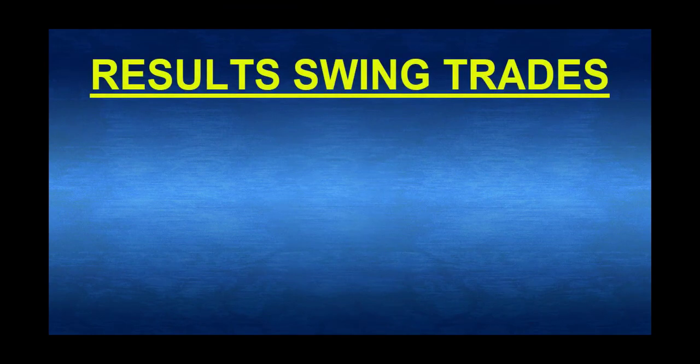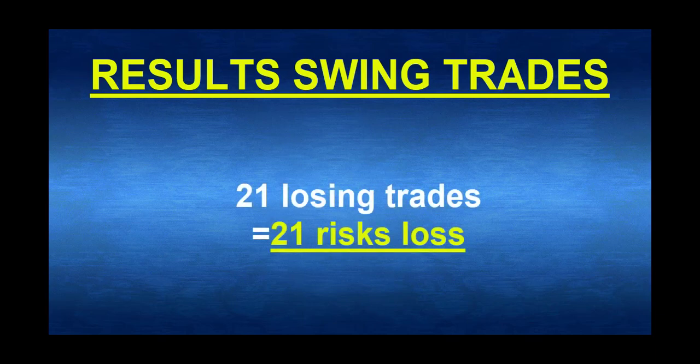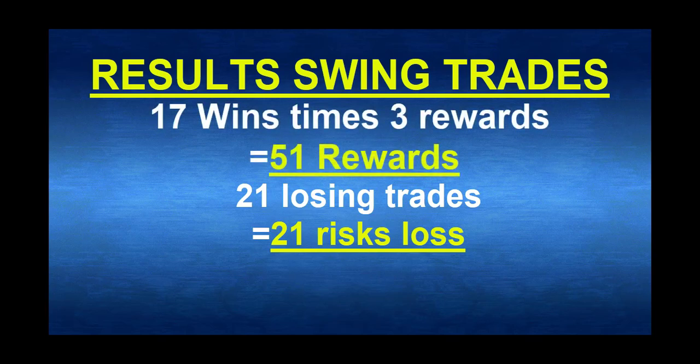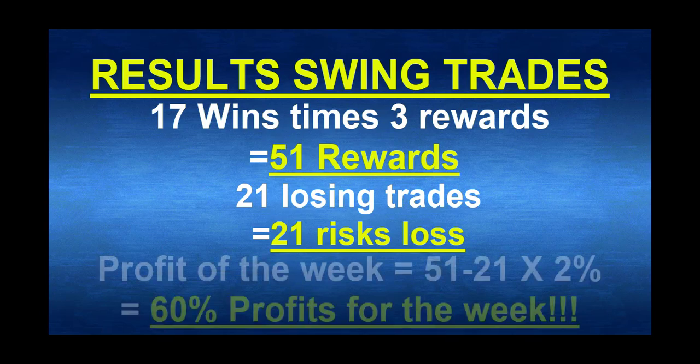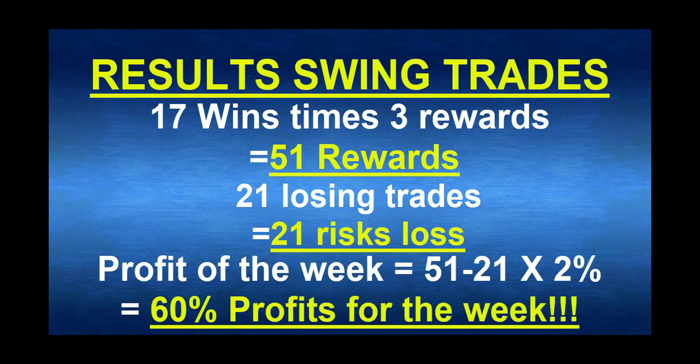Let me give you the account of all trades. There are 21 losing trades and 17 winning trades. The winning trades win 3 times each, so 17 times 3 equals 51 reward, minus 21 losing setups equals 30 rewards of profit for the week. 30 rewards times 2% is 60% of your account using the swing trading strategy - it still rocks every week.